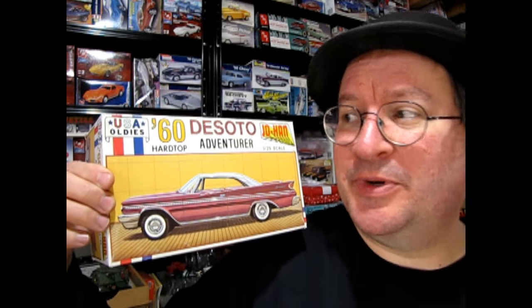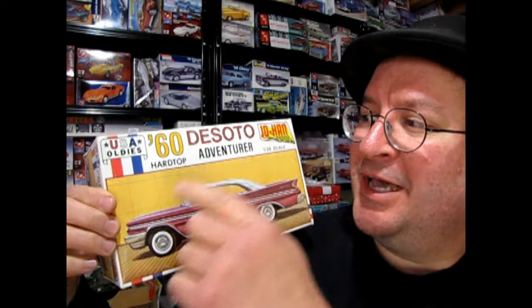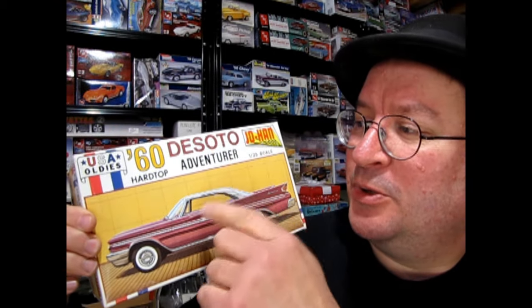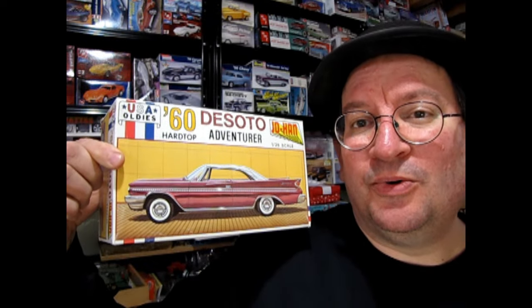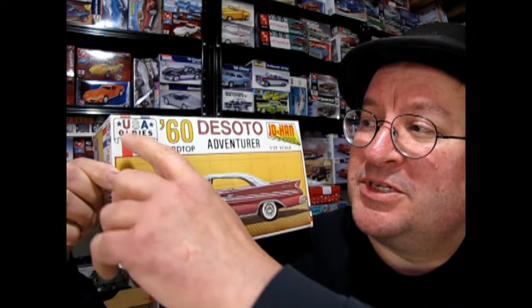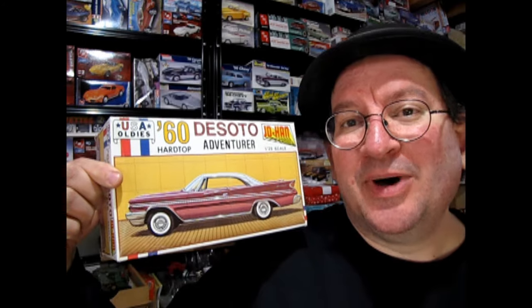Hello once again, Monster Hobbies Model Car Garage Mechanics. Welcome back to another exciting episode of the Monster Hobbies Model Car Garage. Today we're looking at an old Johan kit, one that I picked up in John Harry's estate after he passed away. This is the Johan 1960 DeSoto Adventurer Hardtop in 1/25th scale, another really cool old kit. This is a USA Oldies edition, so lots of fun.